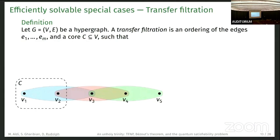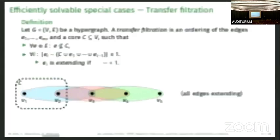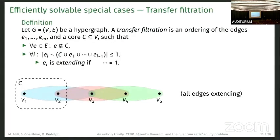This is our ordering, like these three edges one, two, three, and the core is these two vertices, such that no edge is fully contained in the core and each edge adds at most one extra vertex to the set of the core and the previous edges. An edge is extending if it actually adds an extra vertex, and here these three edges all add an extra vertex. We can also have non-extending edges.